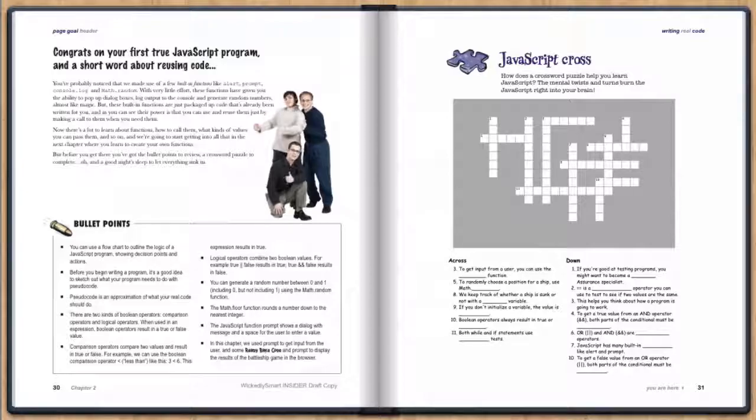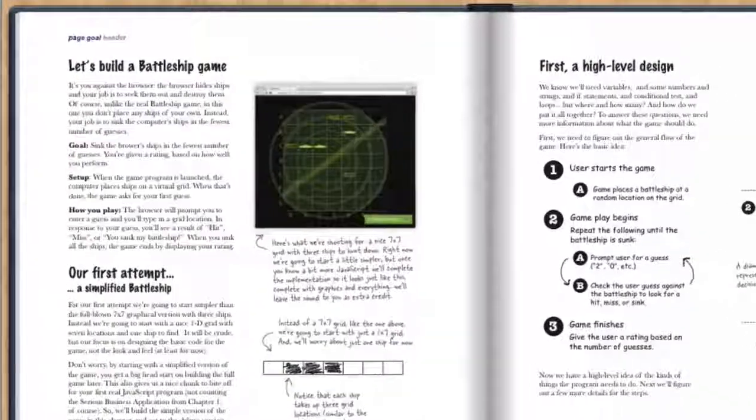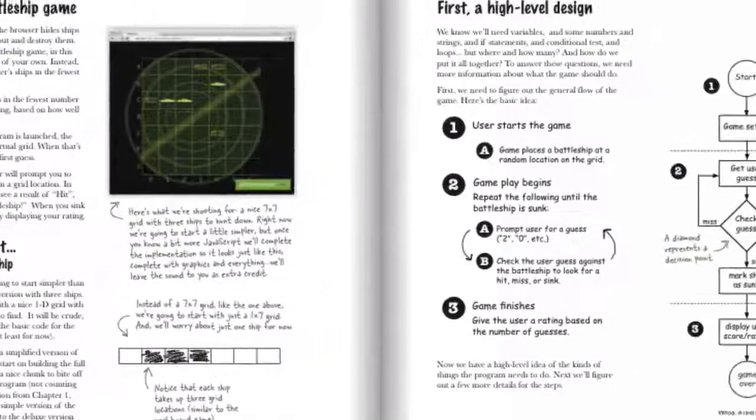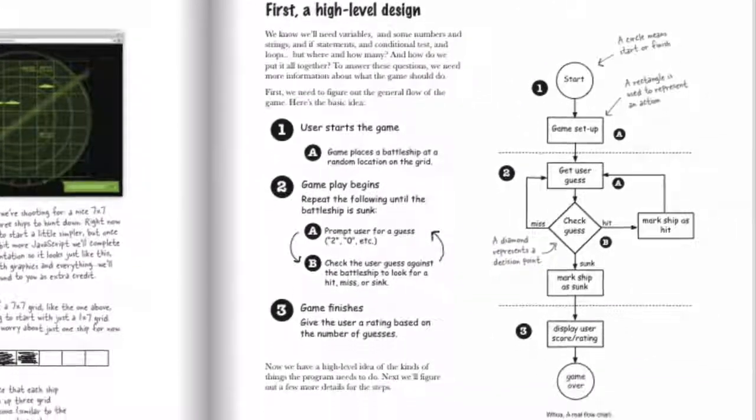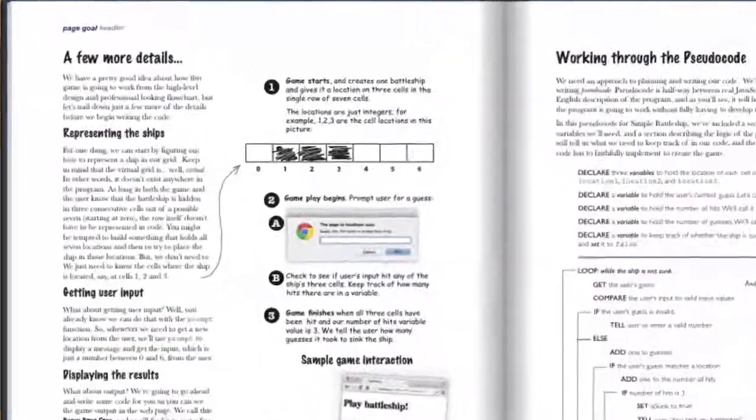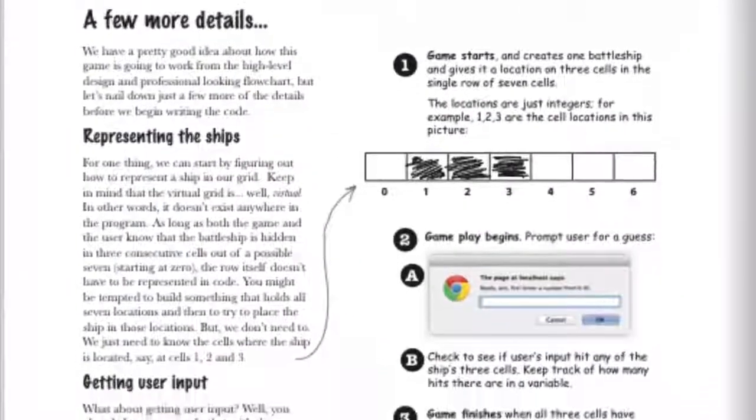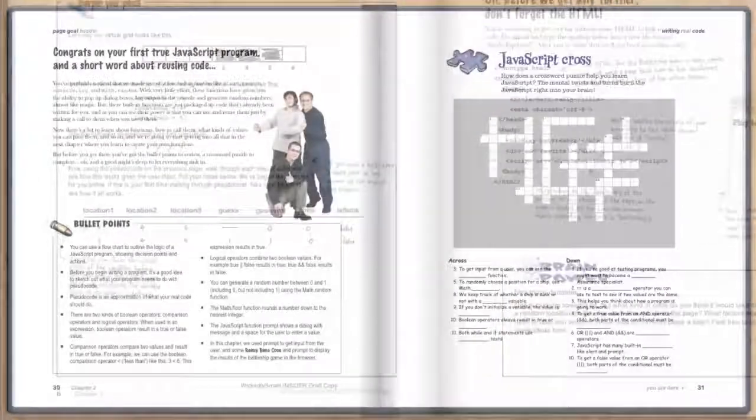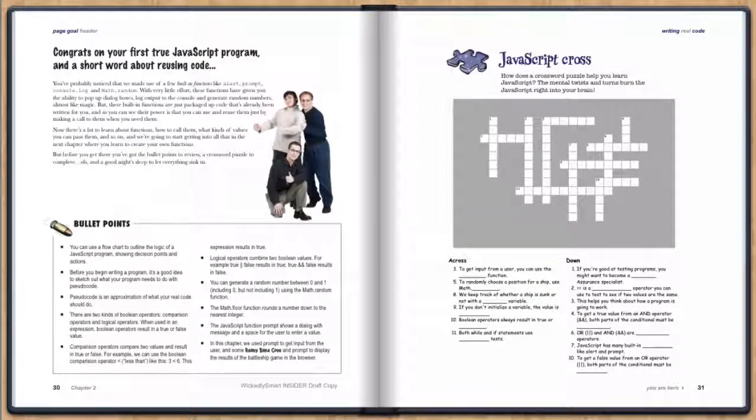The main thing we want you to get out of this chapter is understanding the process of taking an idea for a game to a high-level design to an actual implementation in JavaScript. Our implementation is very basic, no graphics, and only the most basic interaction with the user. But that's a great way to begin to learn how to write real JavaScript programs.